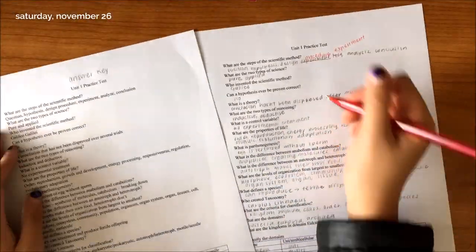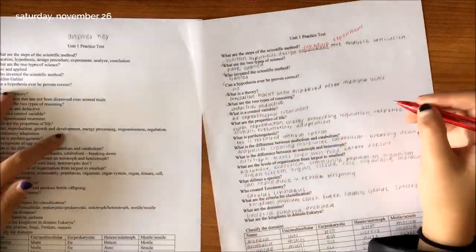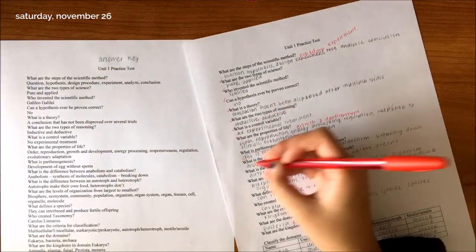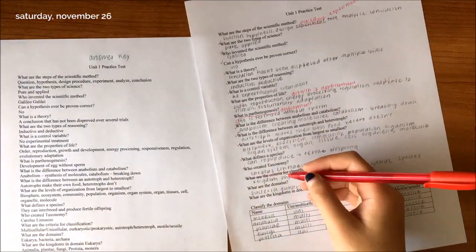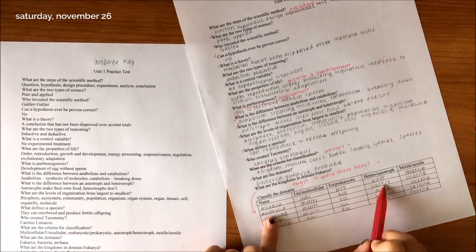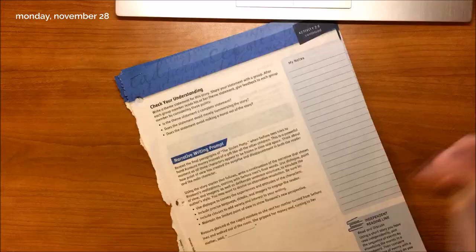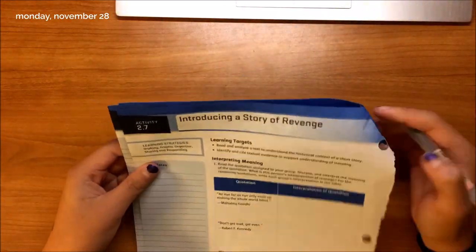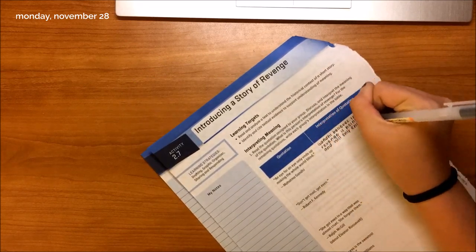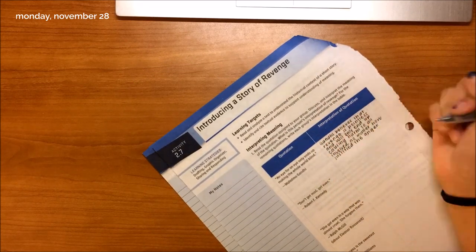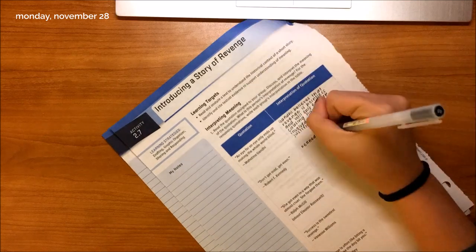And now I'm correcting it with a red Papermate Inkjoy pen. I'm analyzing some quotes for pre-reading for the Cask of Amontillado, using a Muji gel ink pen.